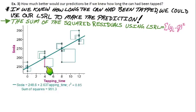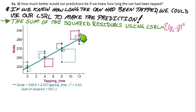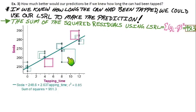Using the LSRL, the residuals are the vertical distance from each point to the line — the same technique as before. The squared residuals are already shown on the graph, highlighted in pink. You can visualize the squared residual as the area of each of those squares — that's what we try to minimize. In this case, the sum of the squared residuals using the LSRL is only 951.3, which is much less.